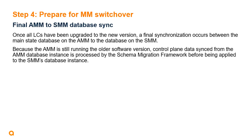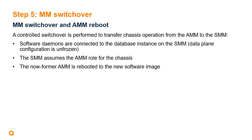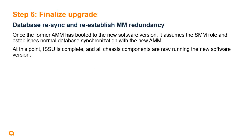Once all line cards have been upgraded to the new software version, a final synchronization cycle is initiated between the main database on the active module and the database on the standby module through the schema migration framework. Because the active module is still running the older software version, that data must be converted to the format used by the new software version on the standby module. Once that final synchronization is complete, a controlled management module switchover transfers chassis operation from the active module to the standby module. The standby module assumes the active management module role, and the former active module is rebooted to the new software image. Once it has booted, it assumes the standby role and establishes normal database synchronization. ISSU is then complete, and all components in the chassis are running the new software version.